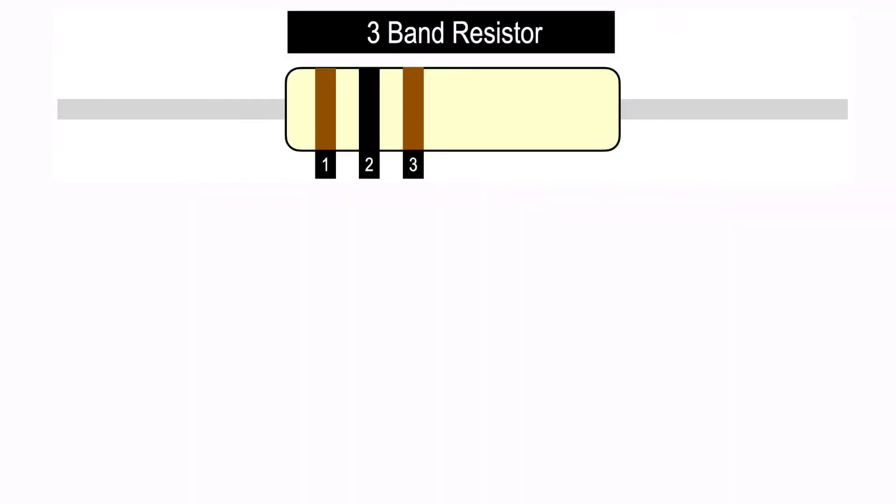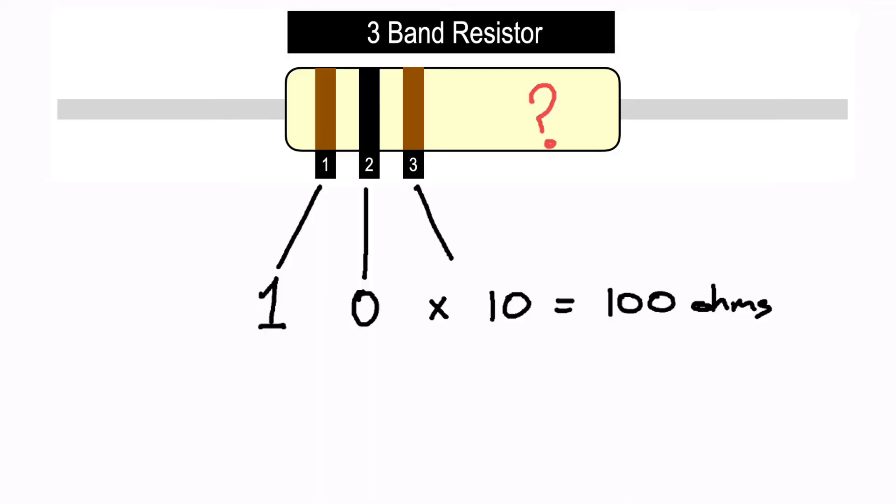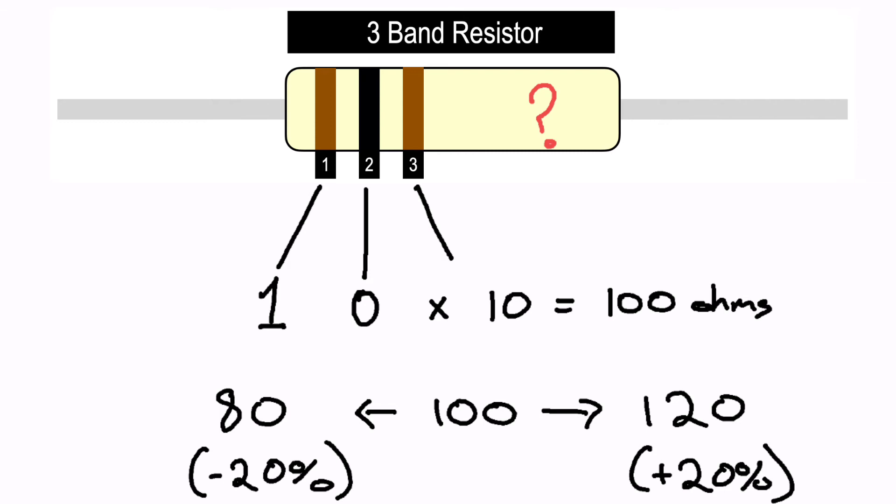The process for reading the resistance value on a three color band resistor is very similar. Essentially, we're looking at the same thing minus the tolerance band. So again, if we read this as brown being the first digit of our resistance value, which we know is one, black being the second digit of the resistance value, which we know is zero, and the third band, brown again, being the multiplier value, in this case being 10, we get 100 ohms. But what do we do about the accuracy of the resistor? When the tolerance band is missing on a three band resistor, the tolerance value is 20%. That's the default tolerance value. So essentially on this one, we have a 100 ohm resistor plus or minus 20%. So the value of the resistor could be anywhere from 80 ohms all the way through to potentially 120 ohms.